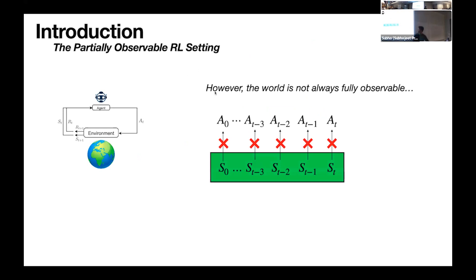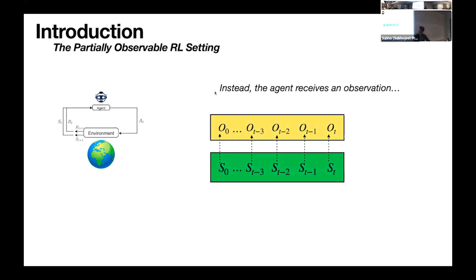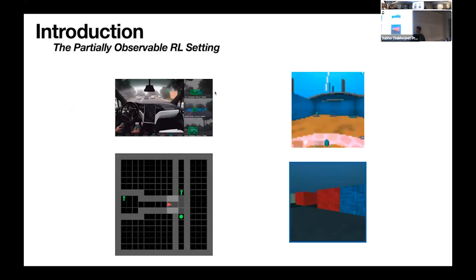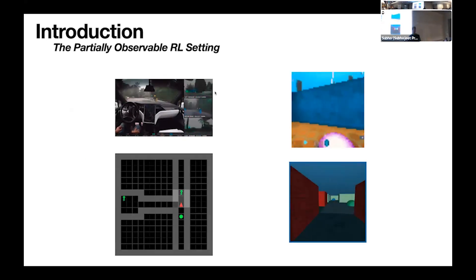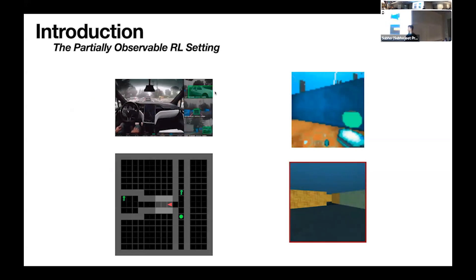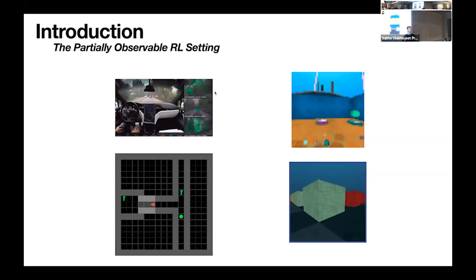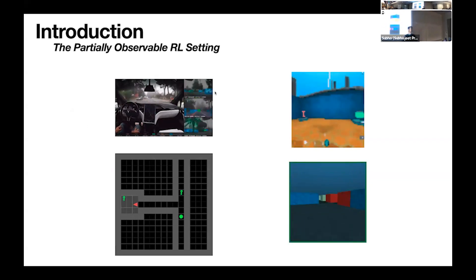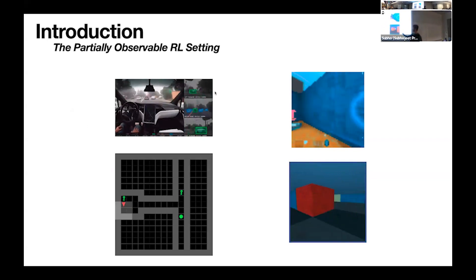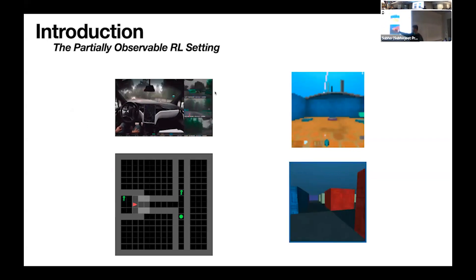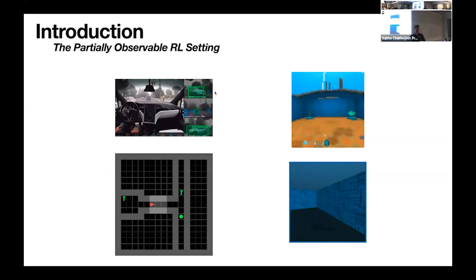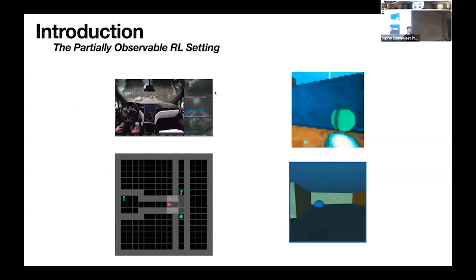Often in reinforcement learning the world isn't fully observable. Instead of seeing the entire true state of the world, the agent receives an observation that tells very little about the entire state. This is common in many real-life RL scenarios — for example, an agent learning to drive a car only receives pixel observations from a camera, or an agent in a 3D game or 2D maze can only see a small region around it, not the entirety of the maze.